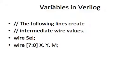So, variables in Verilog. The following lines create intermediate wire values. A wire named sum — this is the name of the wire — and we assign sum to 0. Maybe there are values that you would like to combine to represent intermediate states. The first declaration is for a single wire value, while the second indicates a vector of values.